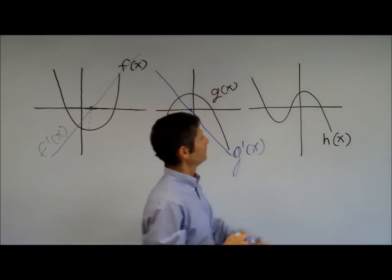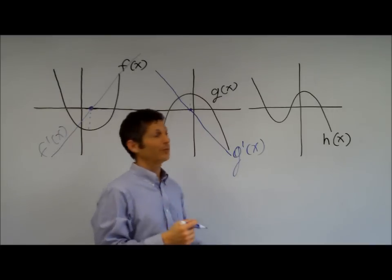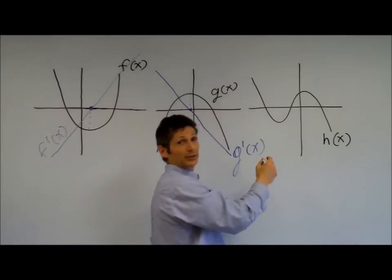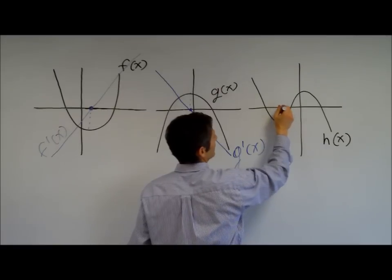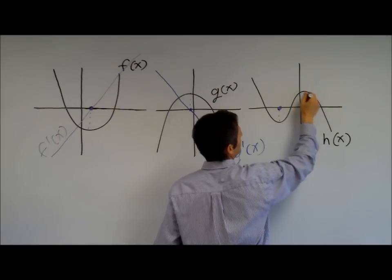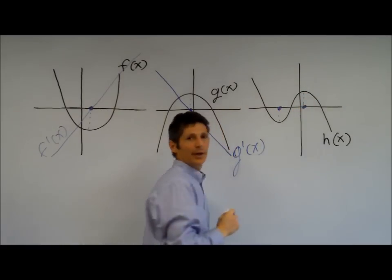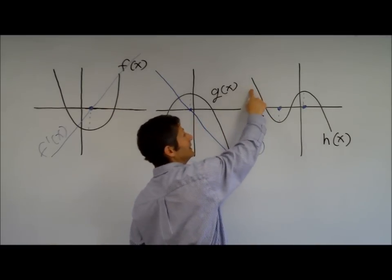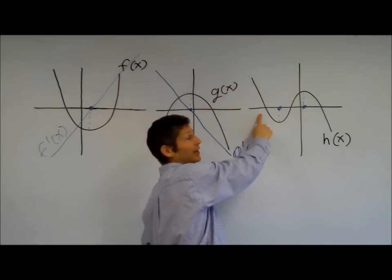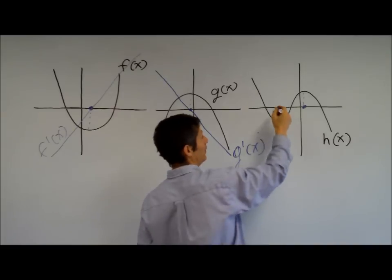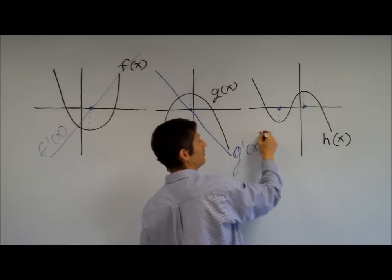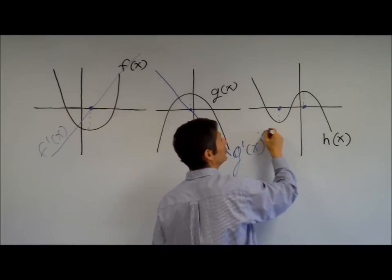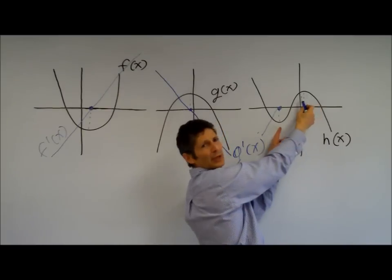And the last one, a little trickier. It's some kind of cubic. There's two places where the slope is zero. Right there. Right there. The slope is negative, and it's getting less negative. It's getting closer to zero, the slope. So my derivative should be very negative, getting closer to zero.